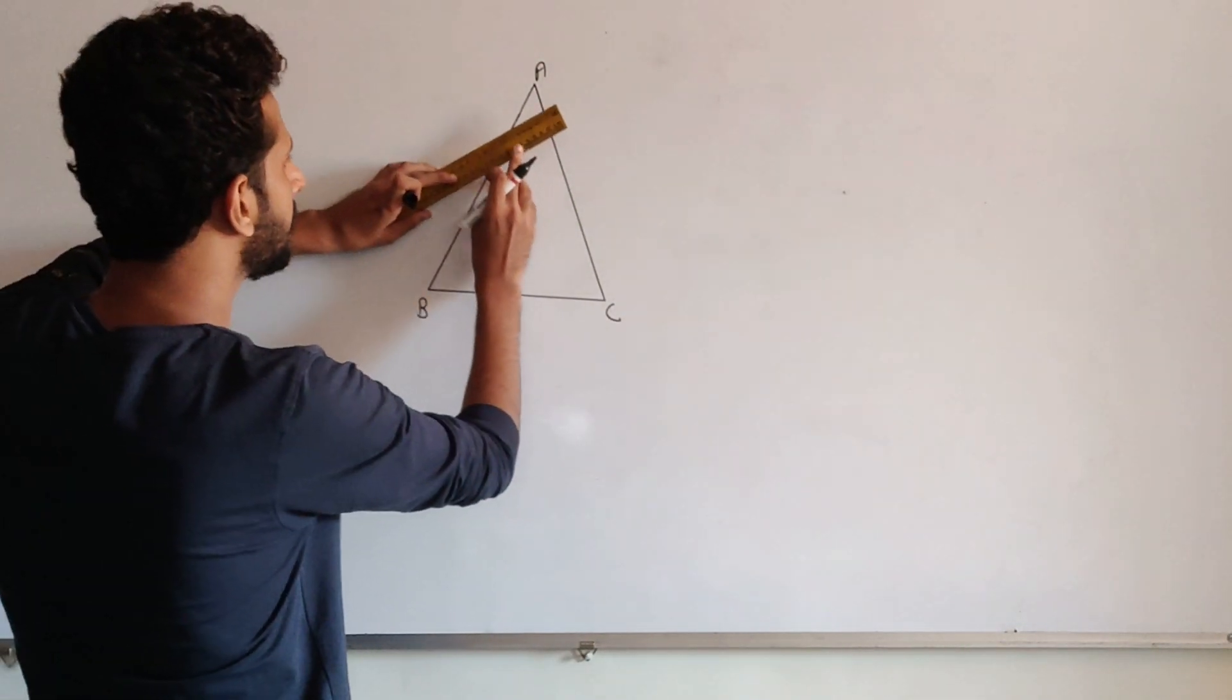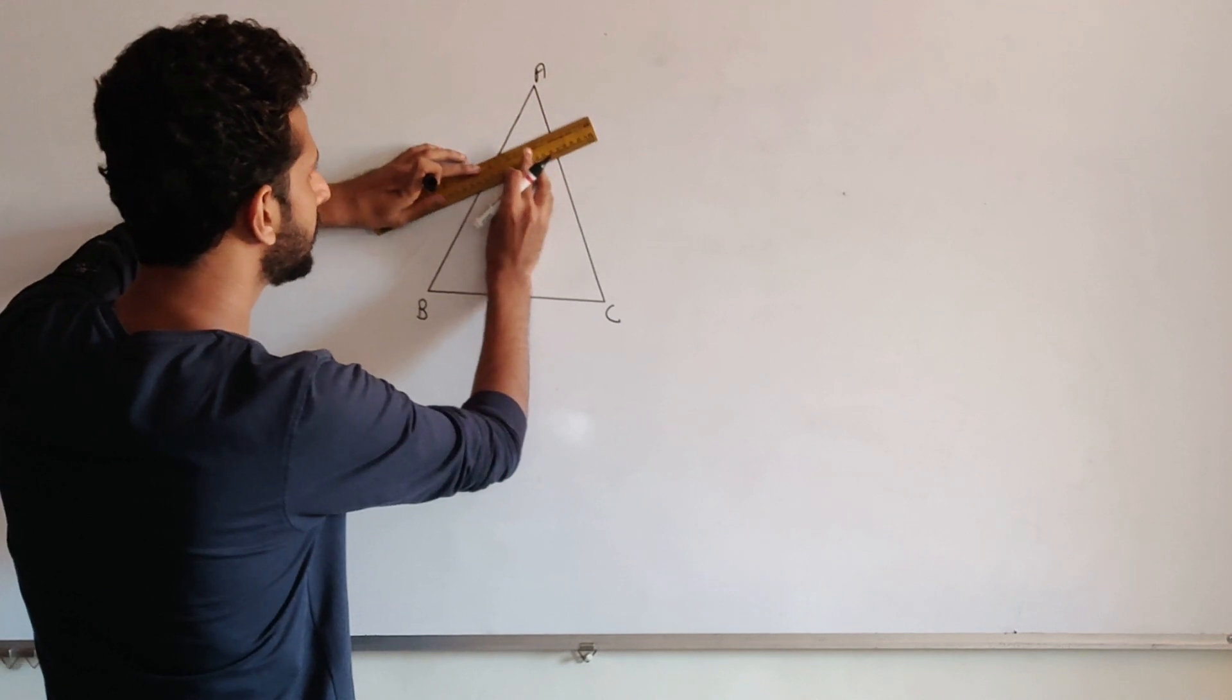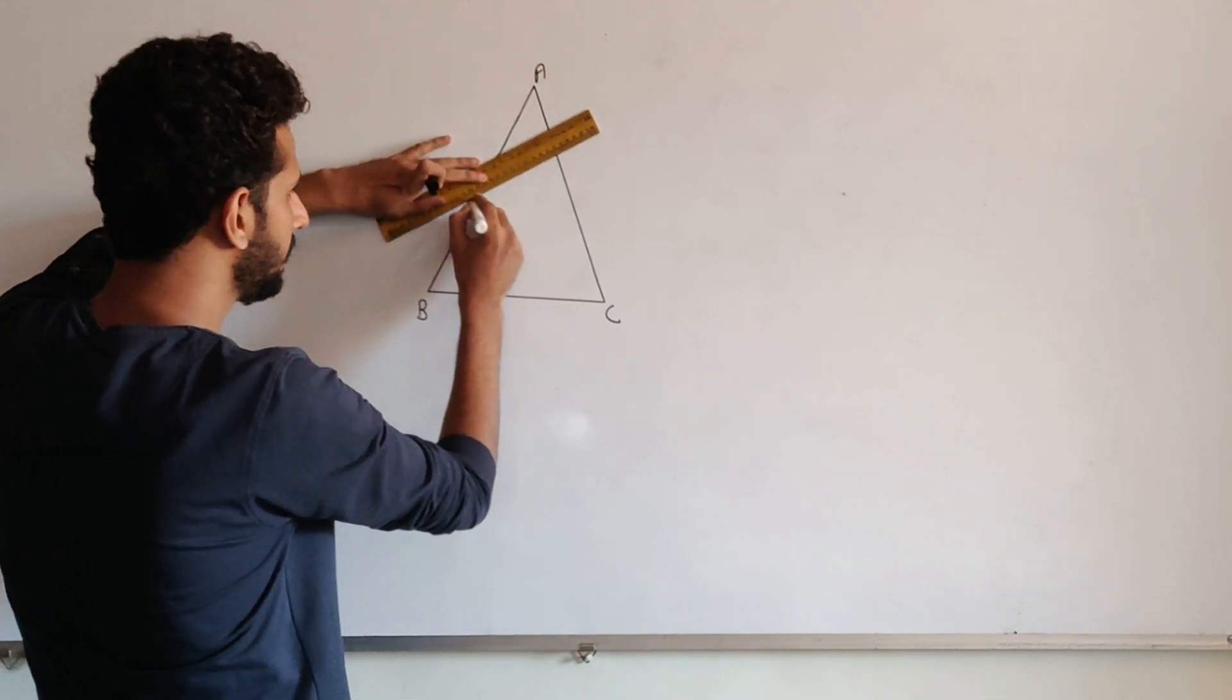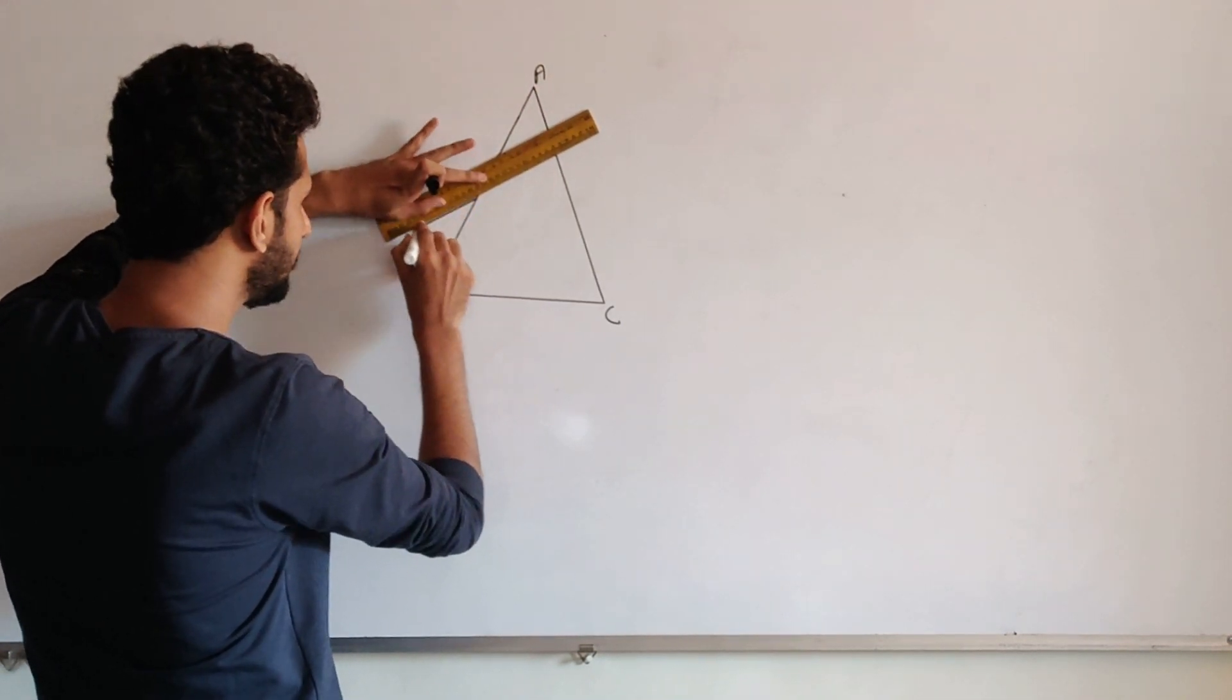Now, in the prism diagram, the first thing is to mark the incident ray. So let me take the incident ray something like this.